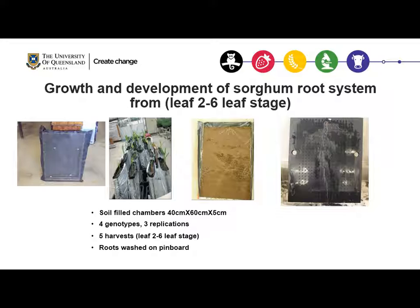We harvested the plants at every leaf stage starting from leaf two to leaf six, giving us five harvests in total. Roots were washed on specially designed pin boards with pins three centimeters apart to maintain the root architecture as seen in the soil.